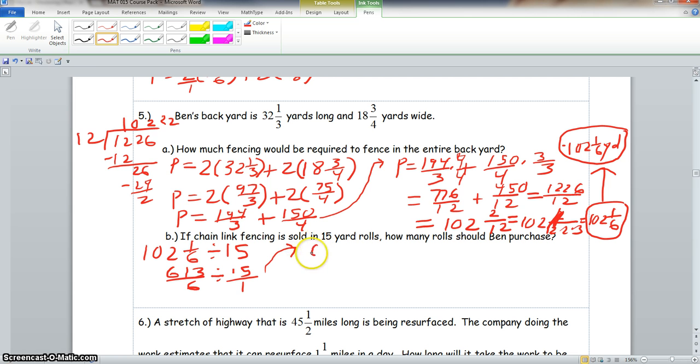So now we would have 613 over 6 times 1 over 15. Now that equals, now this would just be 613, 6 times 15 is 90. So now we would have to go off to the side here and take 90 into 613. 90 goes into 613 six times. So this would be 540.